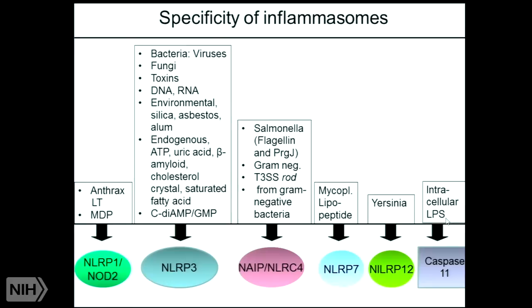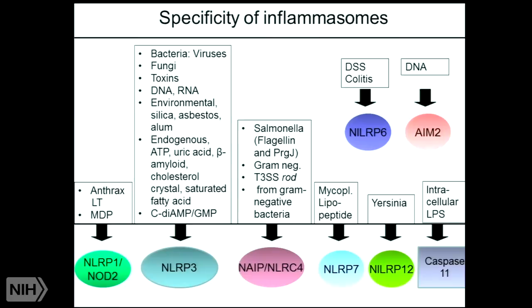DSS colitis can activate NLRP6, though it's not entirely clear what activates this — probably microbiome changes. In addition to NLR proteins, there are other inflammasomes: AIM2 can be activated by DNA, and AIM2 has been crystallized by the Shell lab here at NIH. NIH has done a huge amount of work to promote this field.